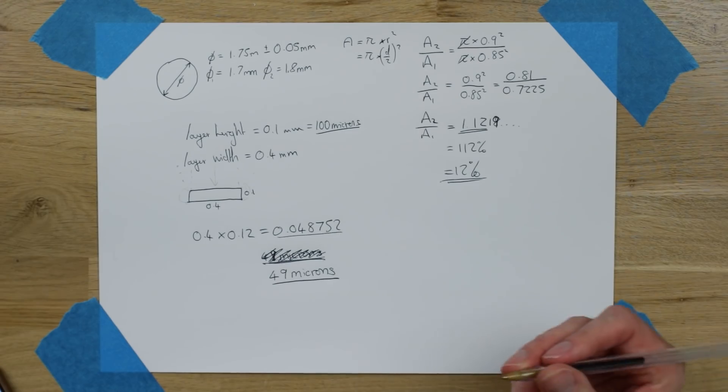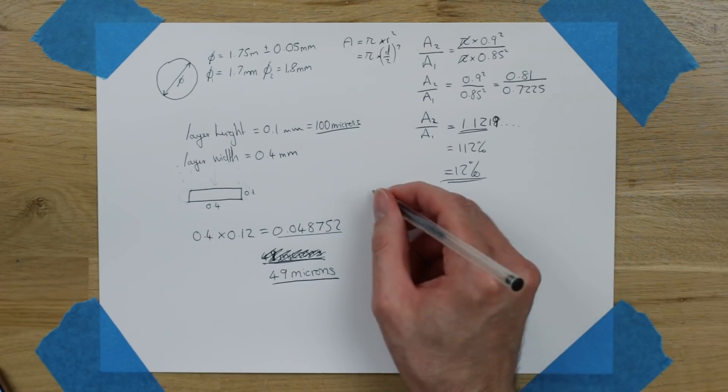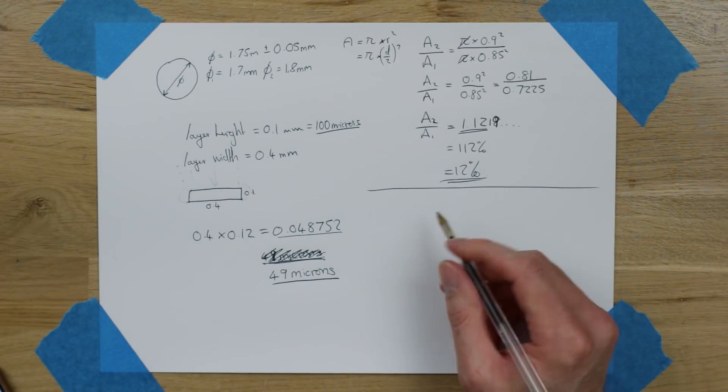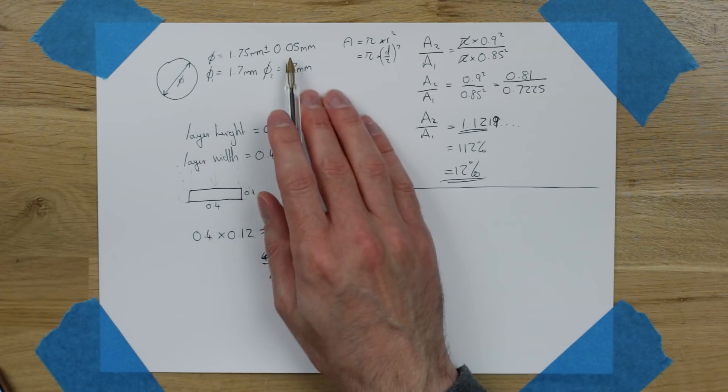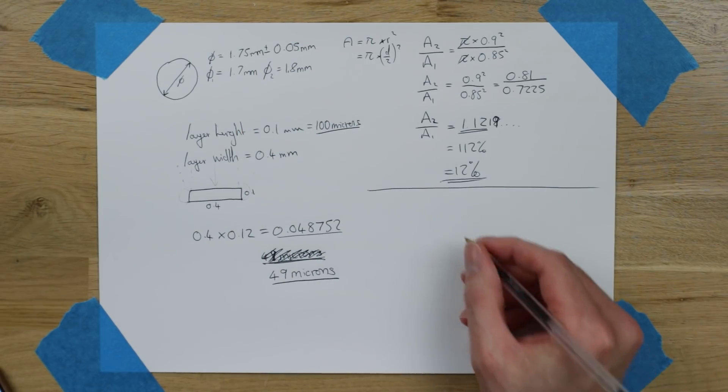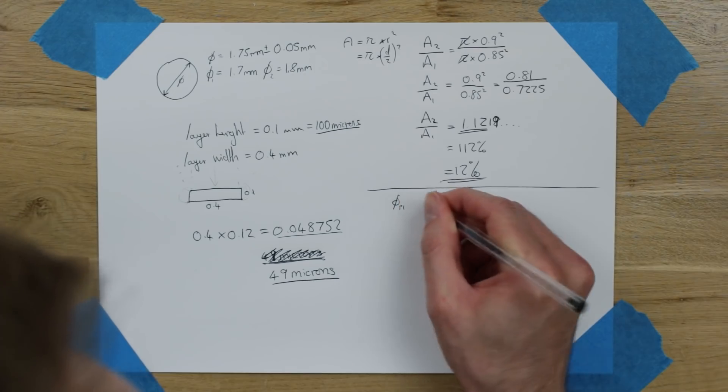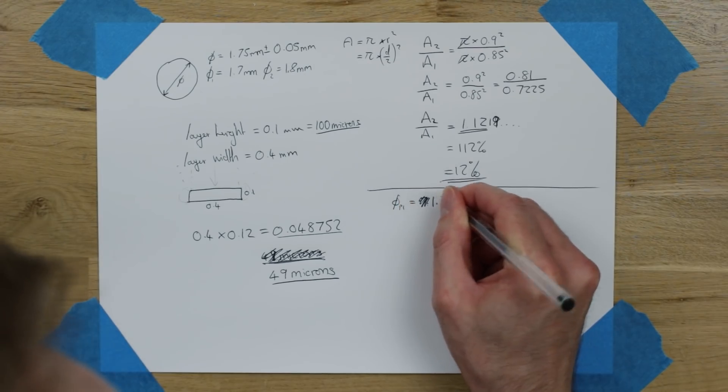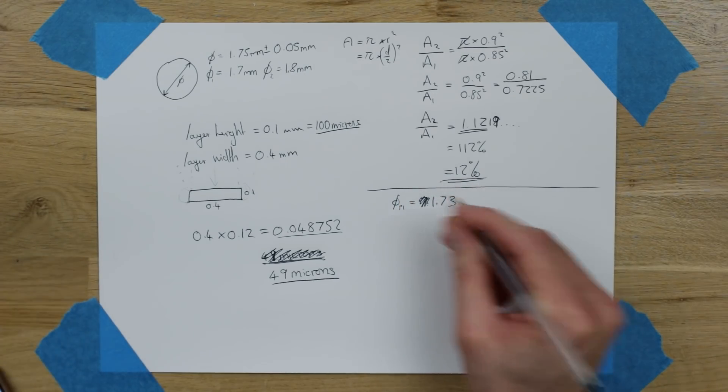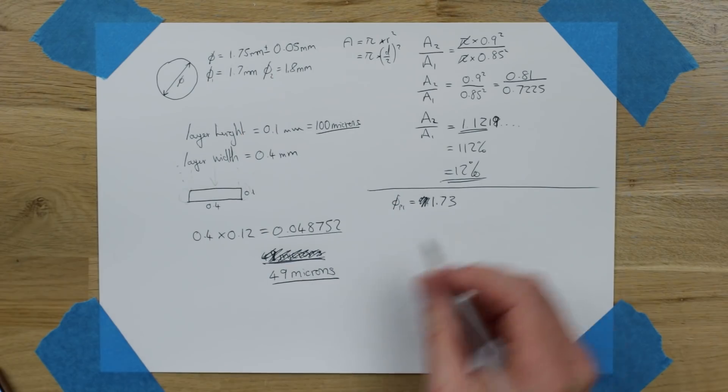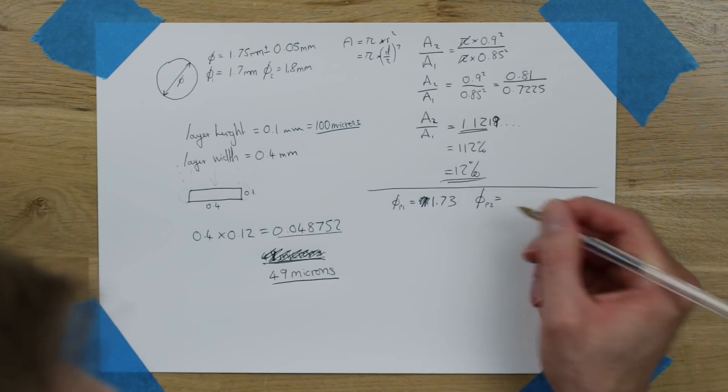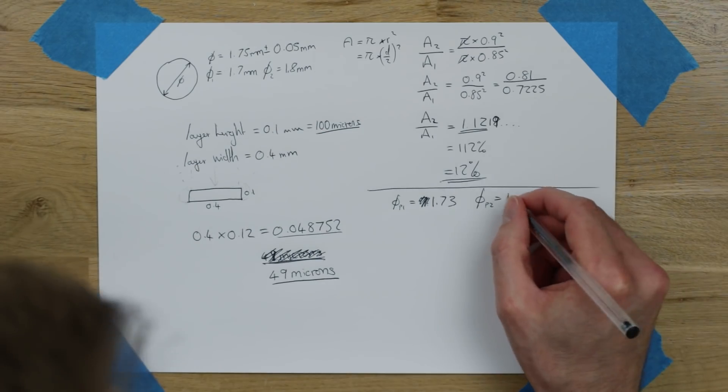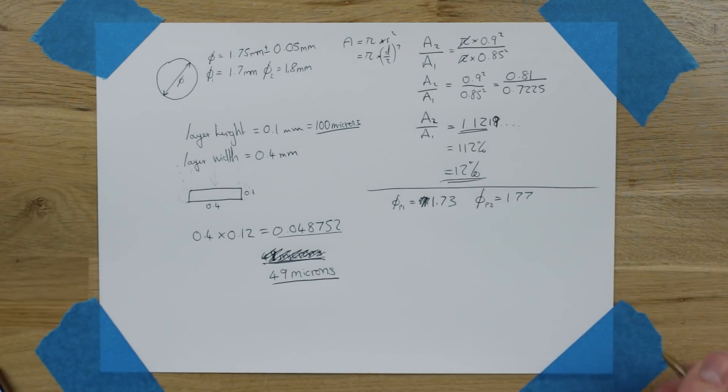So we know now that for this general high quality filament, we're getting a change of about 49 microns, or about half the layer height. So what about Prusament then? How much better is that? Does it make a significant difference? Well, let's say again for 1.75 millimeter filament, we've got a tolerance of plus or minus 0.02 now. So this Prusia 1 is going to be 1.73. So 1.75 minus 0.02. And the diameter of Prusia 2, so the larger one, is going to be 1.75 plus 0.02, which is going to be 1.77.